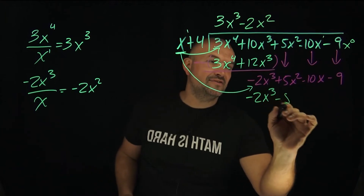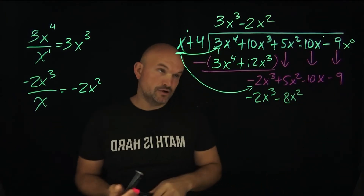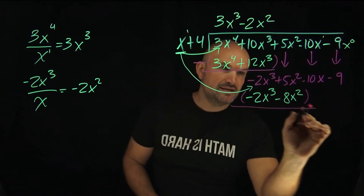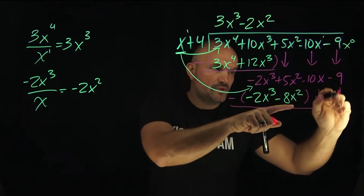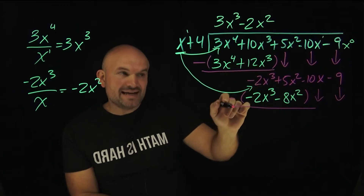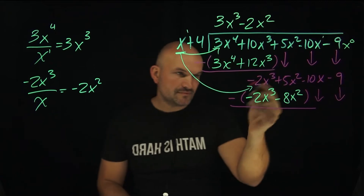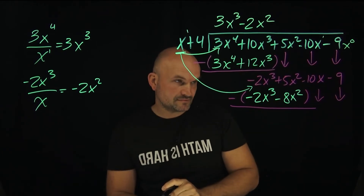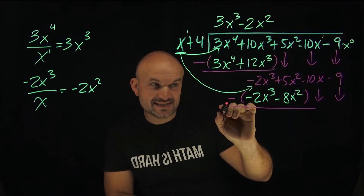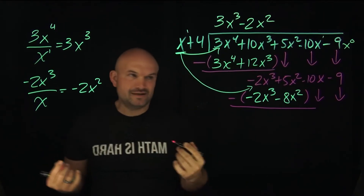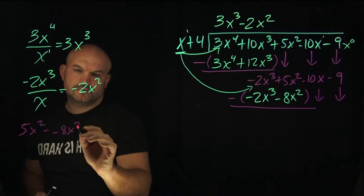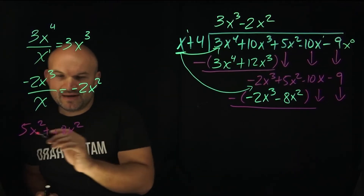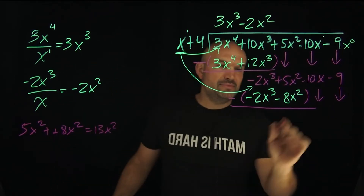Now we subtract our rows again — be very careful with the negatives, this is where mistakes happen. Negative 2x cubed minus negative 2x cubed zeros out. Then 5x squared minus negative 8x squared — that's a double negative, so it's like adding them together — giving us positive 13x squared. Write it on the side if the math isn't making sense. Bring down the remaining terms.